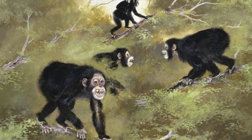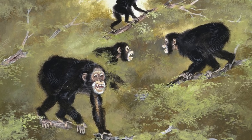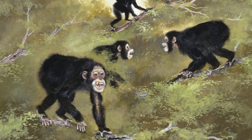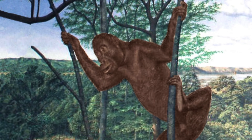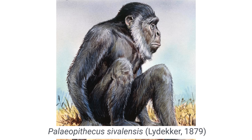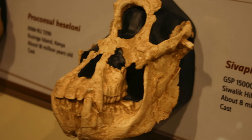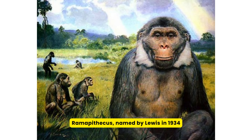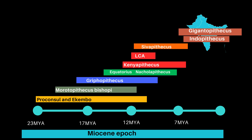While Sivapithecus had a face similar to orangutans, its limbs were not particularly orangutan-like. It likely had a body type similar to modern apes with a broad chest and arms hanging from the side, and probably spent more time on the ground but was still an excellent climber. Initially described as Palaeopithecus sivalensis by Richard Lydekker in 1879, a significant specimen in 1979 confirmed the link to the orangutan. Ramapithecus, named by Lewis in 1934, was initially thought to be a human ancestor but by the mid-1980s was reclassified as a synonym of Sivapithecus.